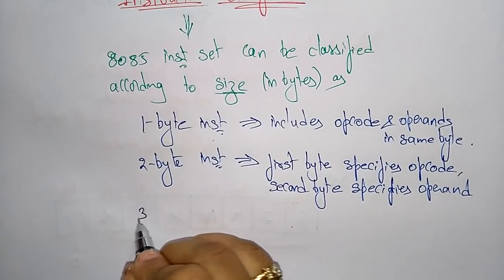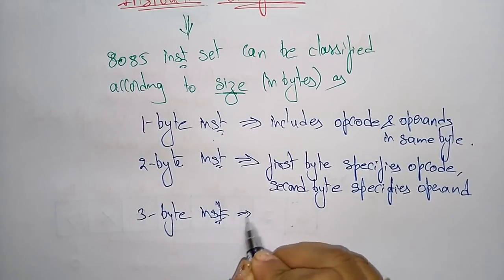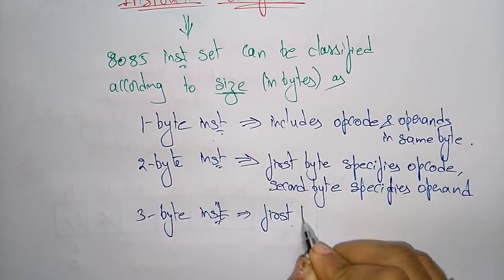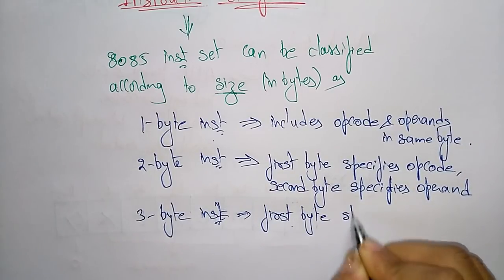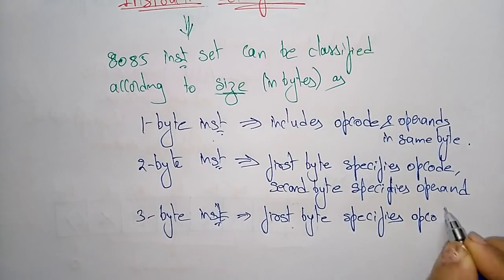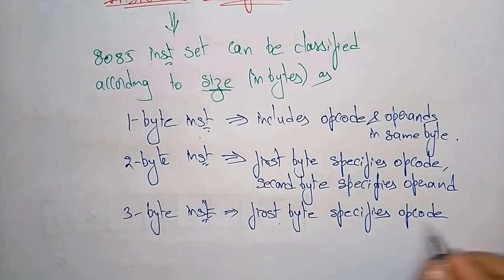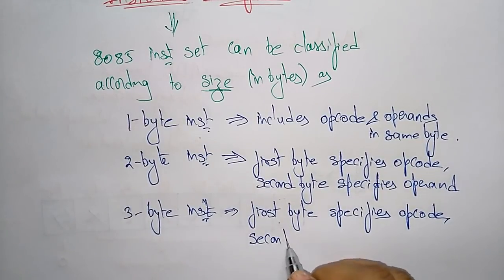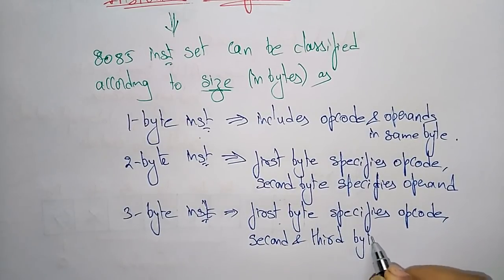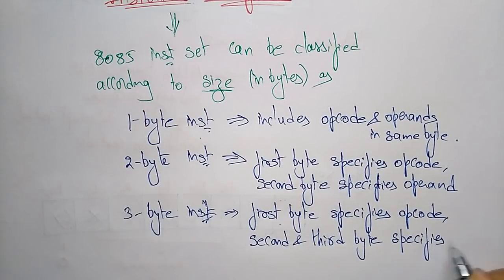Coming to the next, a three-byte instruction: suppose it is a three-byte instruction, the first byte specifies the opcode. So always the first byte, which is eight bits, specifies the opcode — the operation code, what operation has to be performed — whereas the second and third bytes specify the operand.